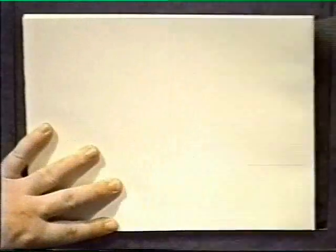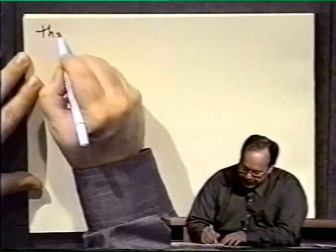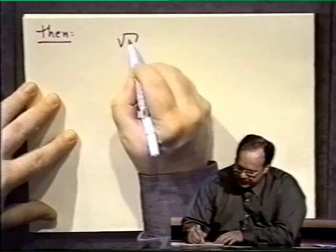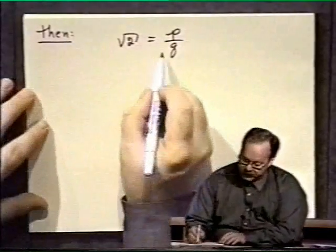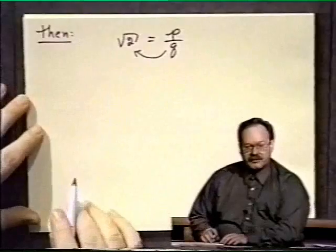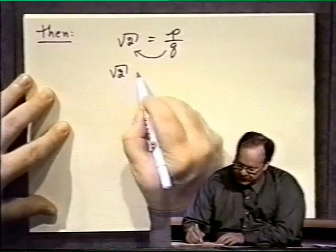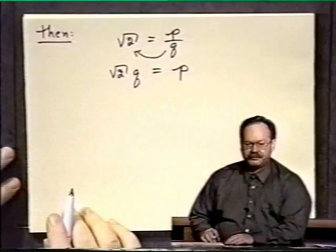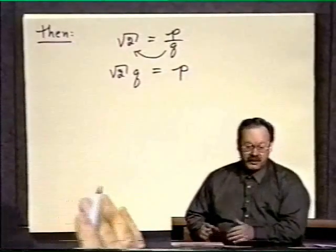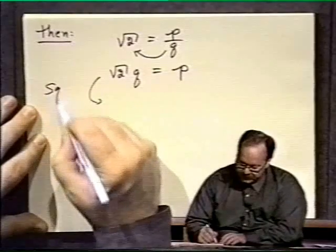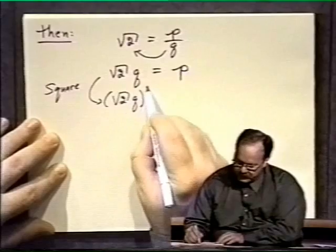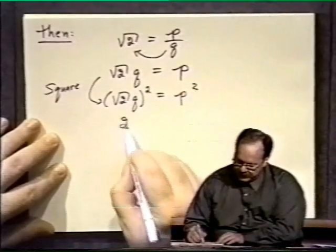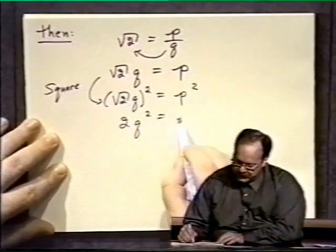Having set this up this way, now we will follow our nose and see what happens. We've got square root of two equals p over q. One thing I can do is multiply both sides by q to bring the q up, so I have square root of two times q is equal to p. Now I don't like the square root symbol, so I can square to get rid of that. If I square both sides, I have square root of two times q squared is equal to p squared. On the left, I get 2q squared is equal to p squared.